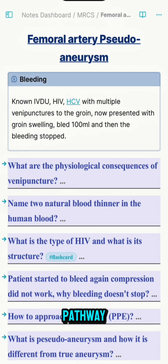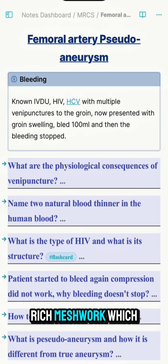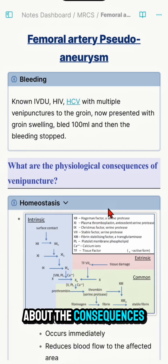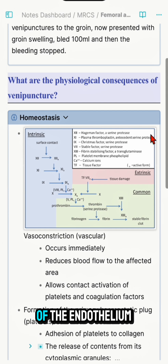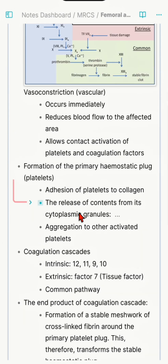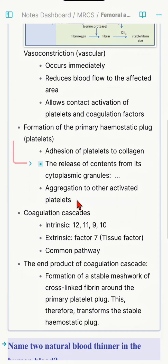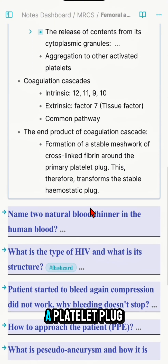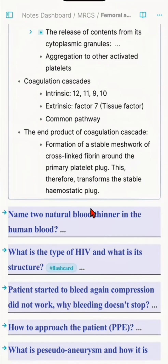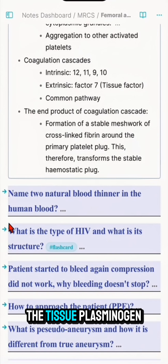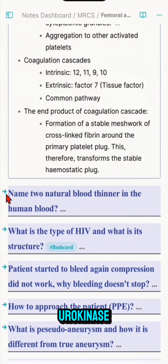The intrinsic and extrinsic pathways converge to form the common pathway, ending in the formation of a fibrin-rich meshwork, which is the blood clot. So the consequences of endothelial injury are: vasoconstriction, platelet plug formation, coagulation cascade activation, and ultimately a hemostatic plug.